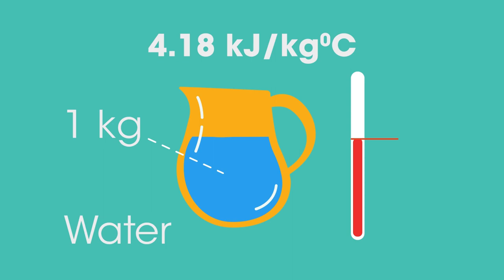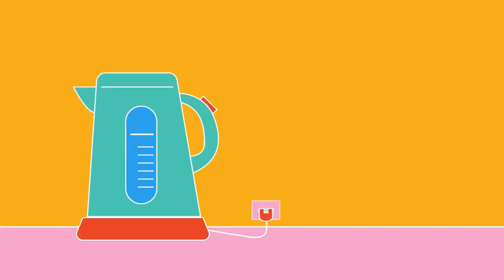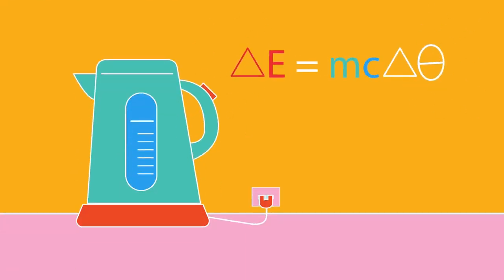Water has a specific heat capacity of 4.18 kilojoules per kilogram per degree Celsius. This means it needs 4.18 kilojoules to heat one kilogram up by one degree Celsius. We can use the equation ΔE = mcΔθ to work out the energy needed to boil a kettle of water.